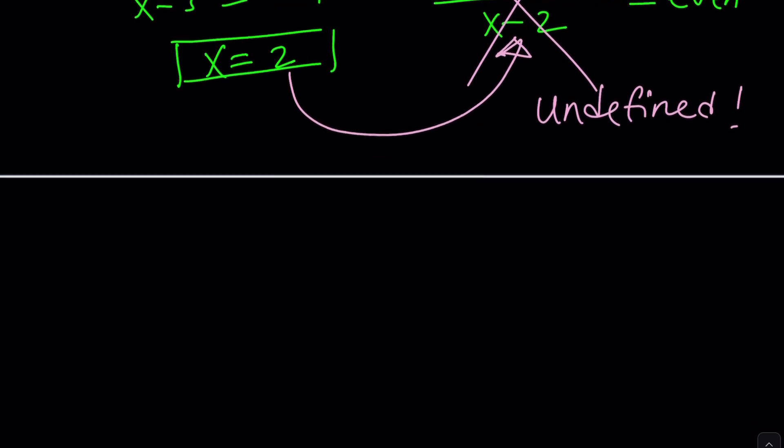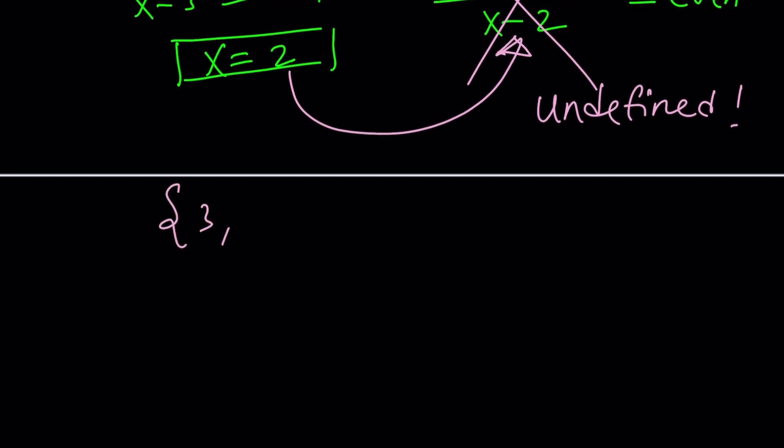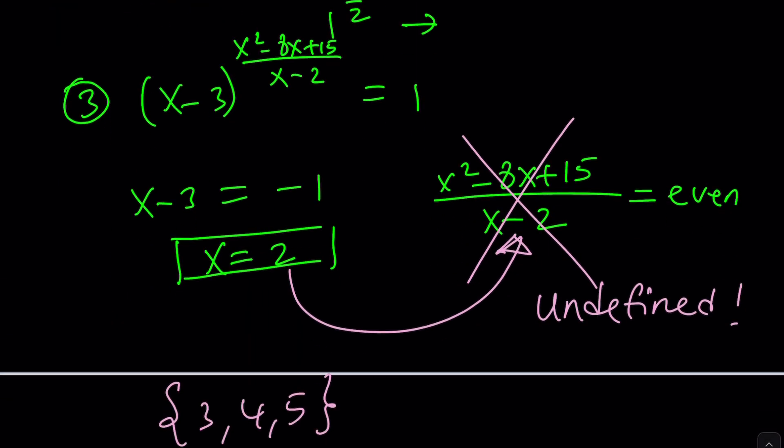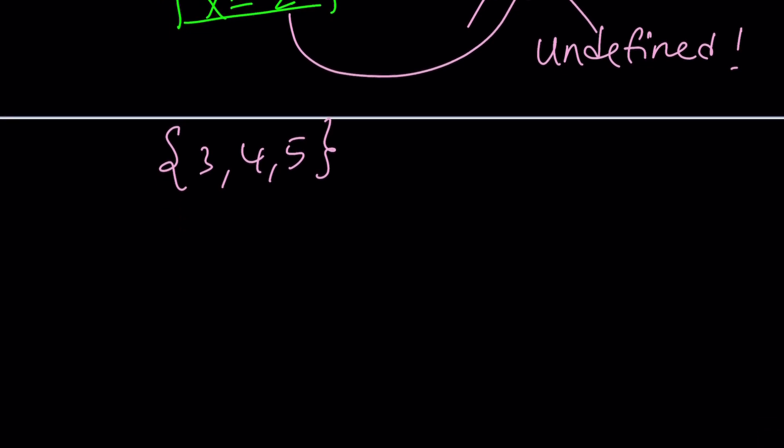So it looks like 3, 4, and 5 are all valid solutions. I know some people are not going to accept one of these solutions for 0 to the power of 0, which is x equals 3. They're going to say like, oh, 0 to the power of 0 depends on the context. No. It's an operation.